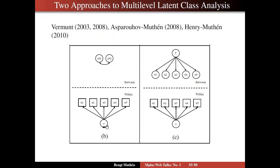On the left-hand side, however, C now, just like in IRT, contains both within- and between-level variation. And if you have then a latent transition analysis built on that, you will confound within- and between-level variation.